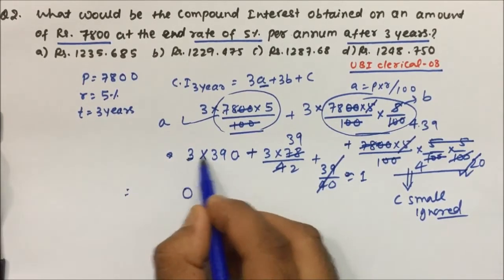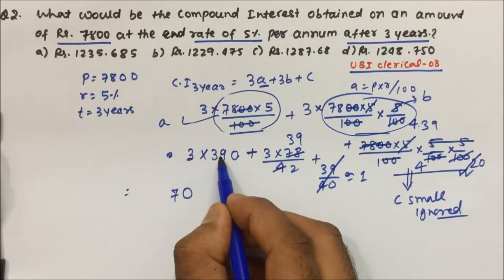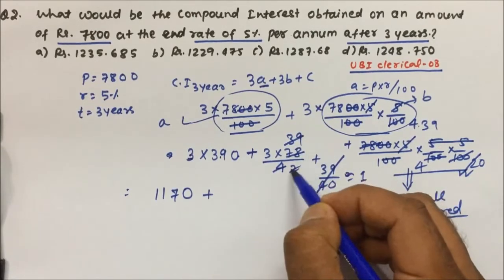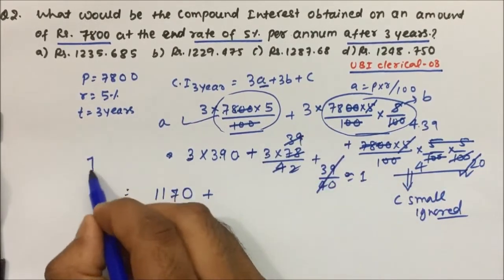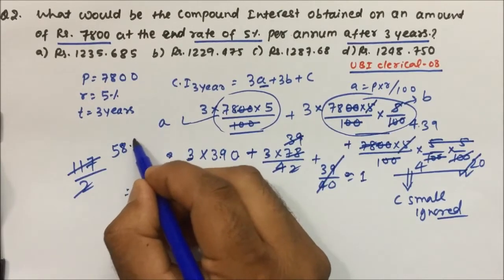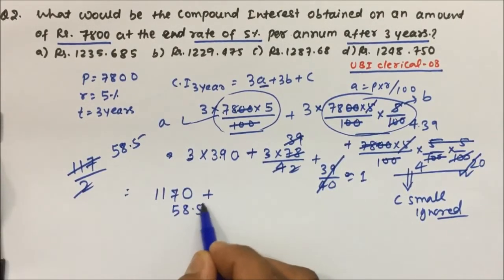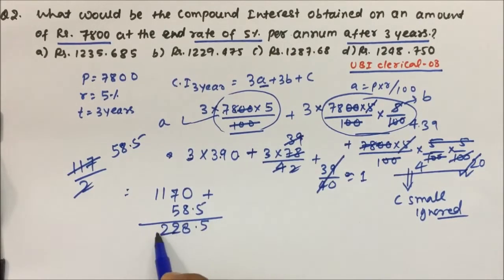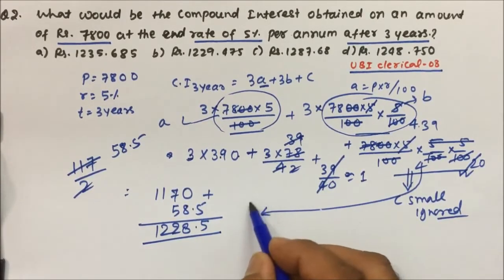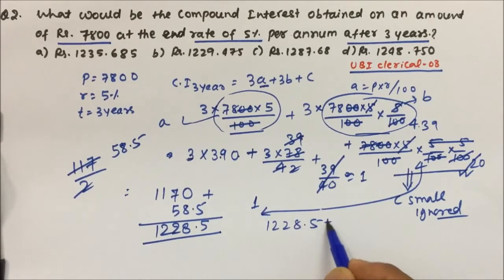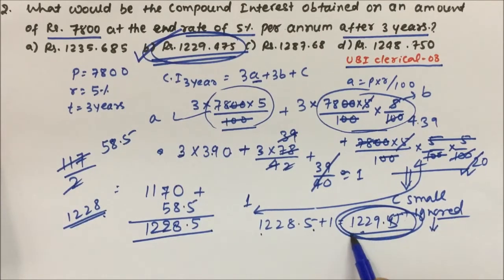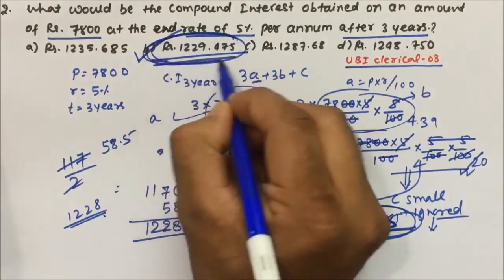Now simplifying 3a plus 3b: 3 into 9 is 27, carry 2; 3 into 3 is 9 plus 2 is 11. Further dividing and multiplying: 3 into 9 is 7, divide by 2 gives 58.5. So the result for 3a plus 3b is 1228.5. Adding c which is approximately 1: 1228.5 plus 1 gives approximately 1229.5.